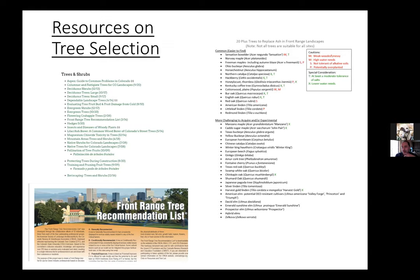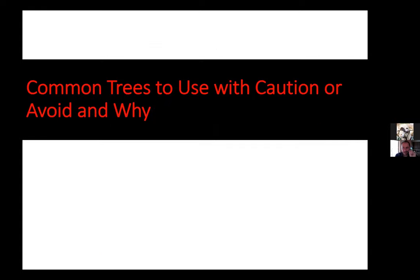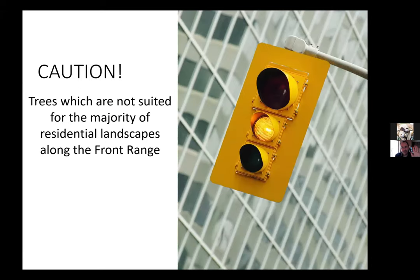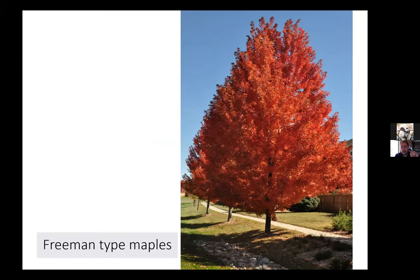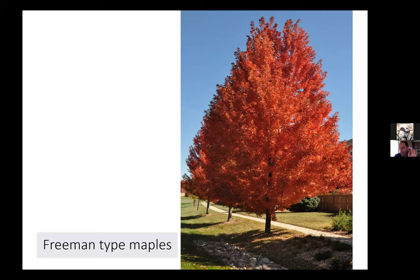I want to highlight some trees I would just not plant. I wouldn't put Freeman-type maples in most Front Range landscapes. The most common is autumn blaze — a hybrid between silver maple and red maple, both bottomland species from the East Coast where soils are much more acidic and moist. Here on the Front Range, these trees often turn a highlighter yellow color mid-summer because they cannot get iron, zinc, and other micronutrients out of our soil. They also have horrible structure. Unless your soil pH is seven or below, I wouldn't mess with Freeman-type maples.